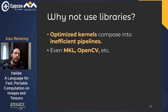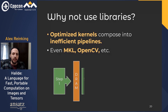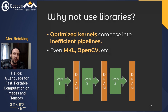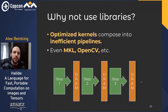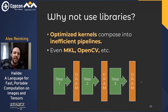You might think application developers can get great performance by composing routines from highly optimized libraries like Intel's Math Kernel Library or OpenCV. The short answer is no, because there's no way to fuse across the stages of computation. Every time you finish calling a function, you sync all your data back to RAM before calling the next one. There's no way to rearrange computation between stages and get small reuse distances. In general, optimized kernels compose into inefficient pipelines.